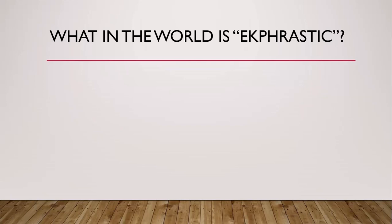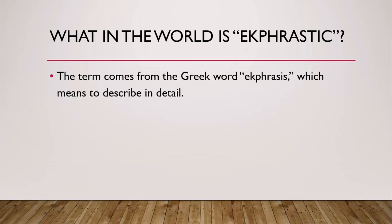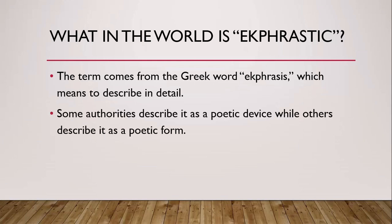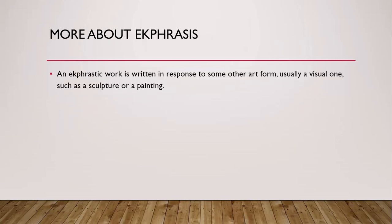The term comes from the Greek word ekphrathos, which means to describe in detail. Some authorities describe it as a poetic device, while others describe it as a poetic form. A device is something which is used within a poem, while a form is something that is the entire poem. An ekphrastic work is written in response to some other art form, usually a visual one, such as a sculpture or a painting.